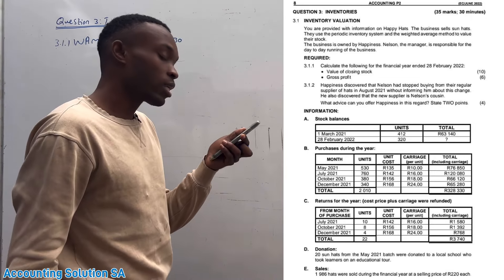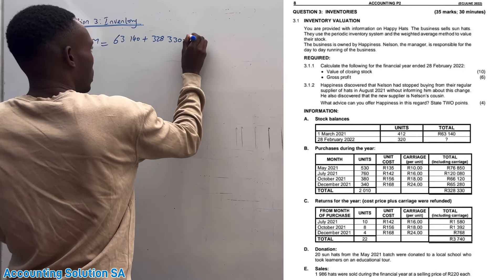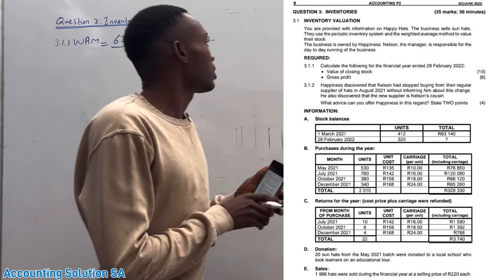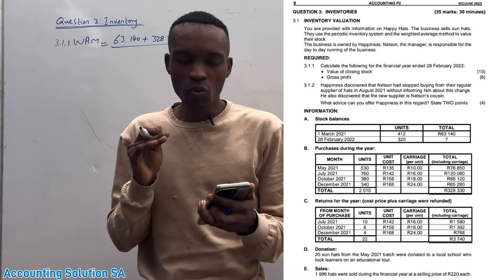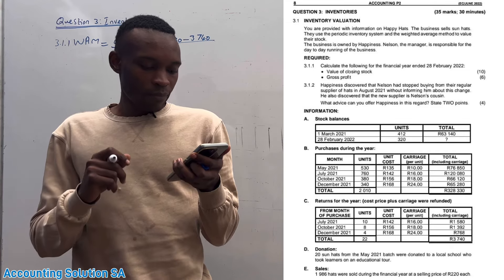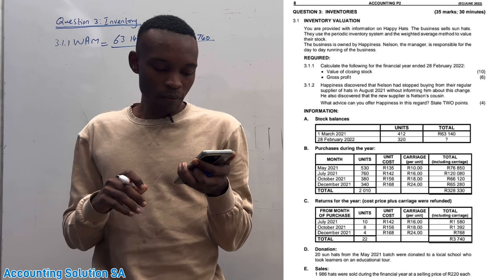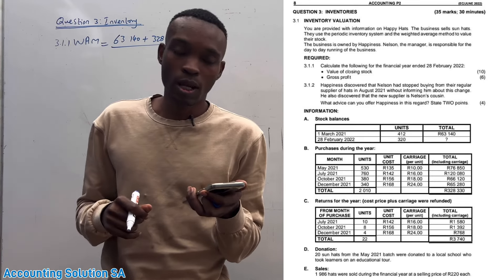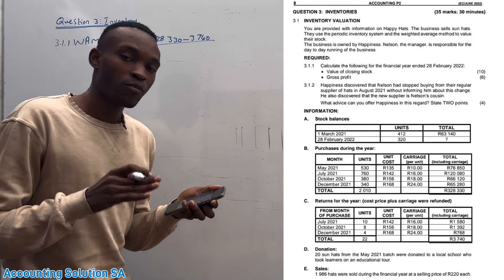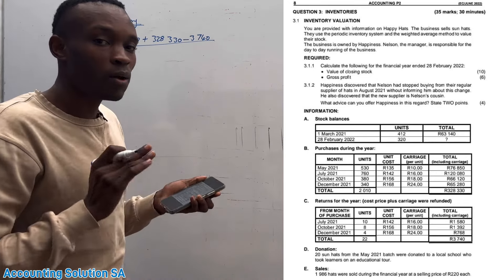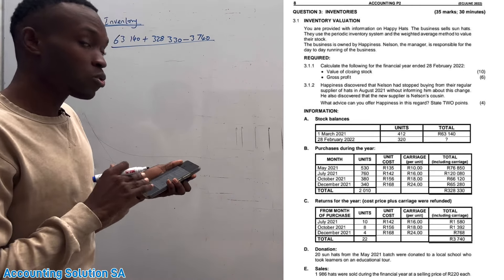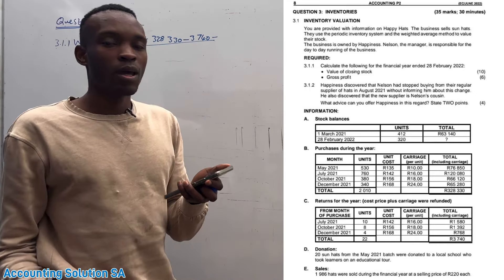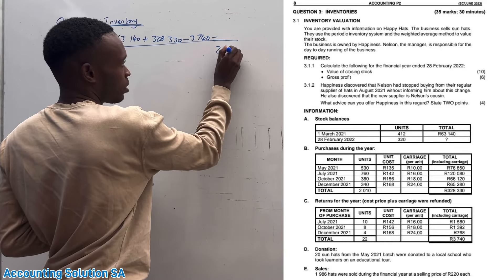We check if we have any returns — yes, we have a return which totals 3,740, so we subtract 3,740. In other previous question papers this was the last part, but now we also have a donation: 20 sun hats from the May 2021 batch were donated to a local school who took learners on an educational tour. This means they are not available for sale. In weighted average we only calculate items available for sale, so this donation must be subtracted.